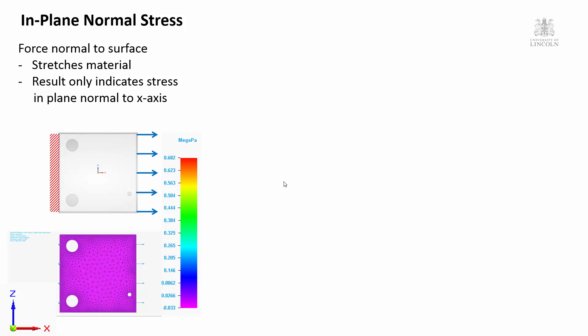Solid Edge has some basic functionality to allow users to consider the way loads will deform objects in a very simplistic fashion. It has static structural, which is basically an equilibrium trial — there's nothing dynamic about it and it can't consider things with respect to time. It also has a modal analysis, which allows some vibration frequency analysis to identify harmonic frequencies. We're not going to worry about harmonic frequencies in these structures; we're just going to care about static structural loading.